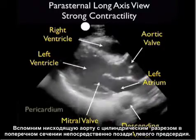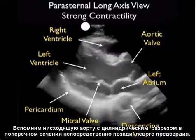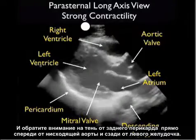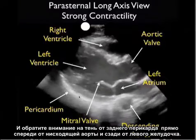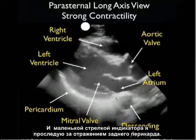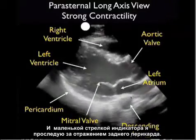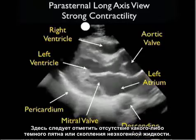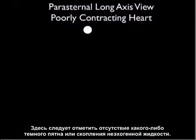Recall the descending aorta, the cylinder cut in cross section just posterior to the left atrium. Note the posterior pericardial reflection coming off just anterior to the descending aorta and posterior to the left ventricle. With a small indicator arrow, I'll trace out the posterior pericardial reflection. Note here the absence of any dark or anechoic fluid collections.